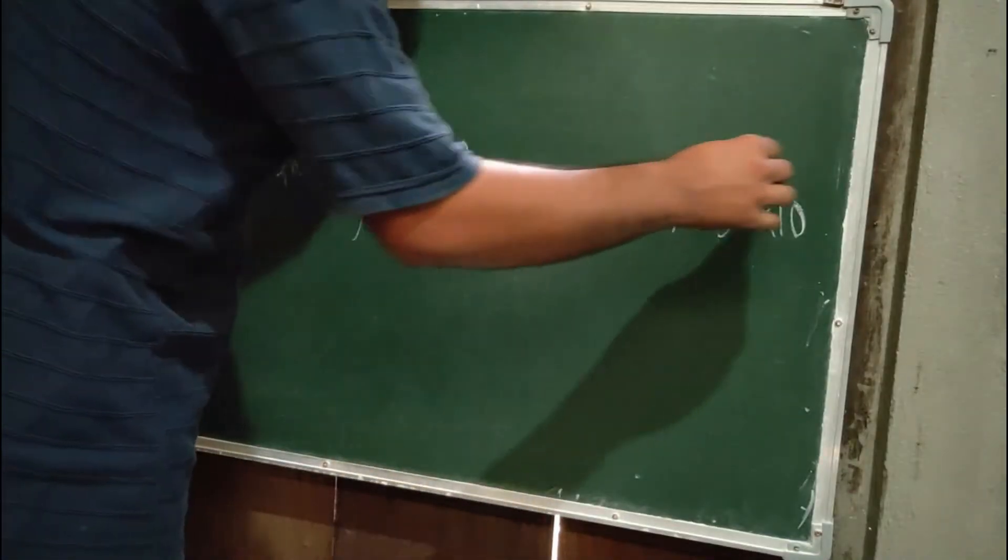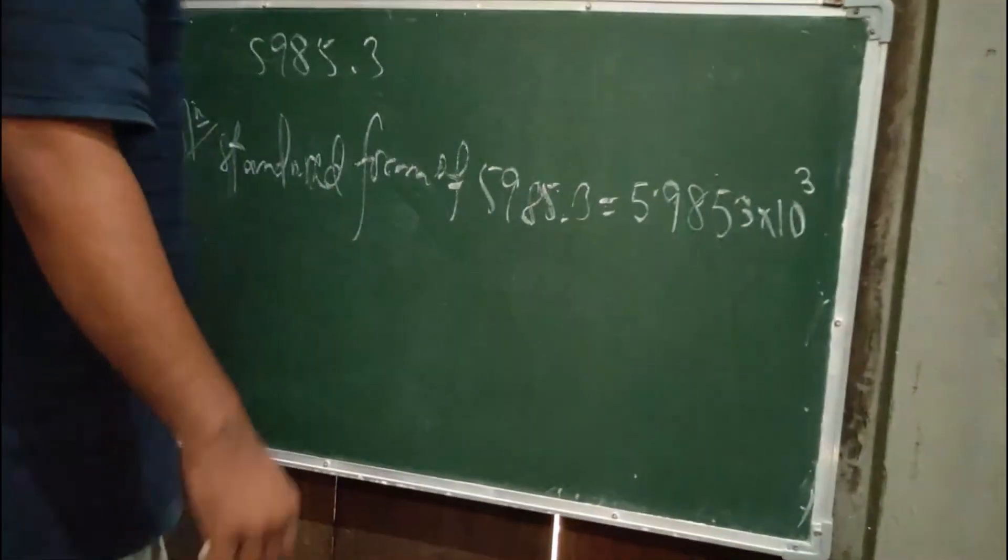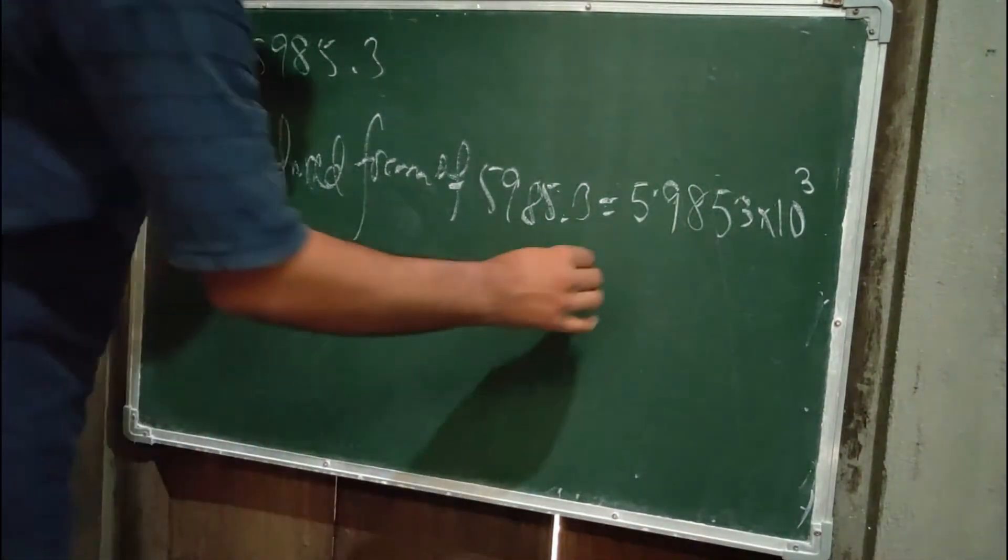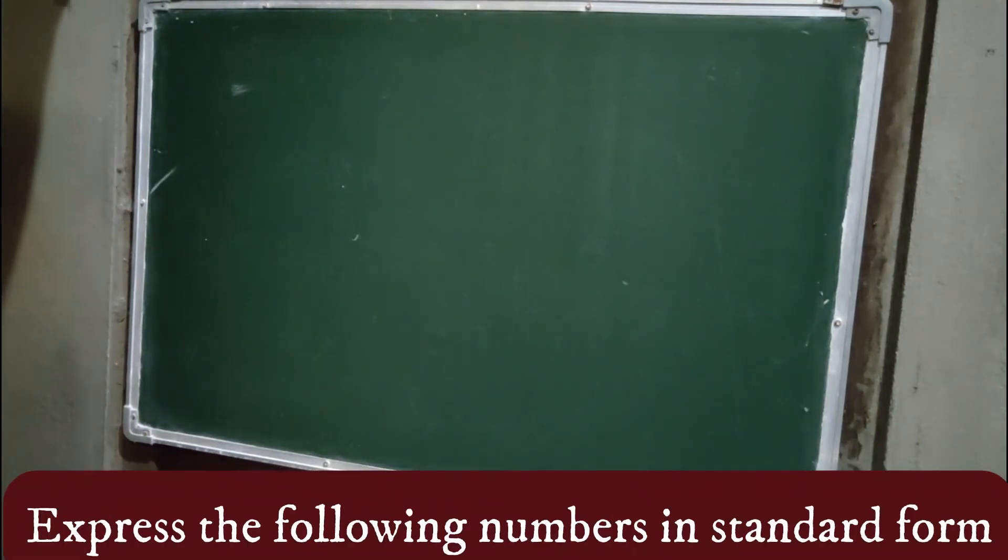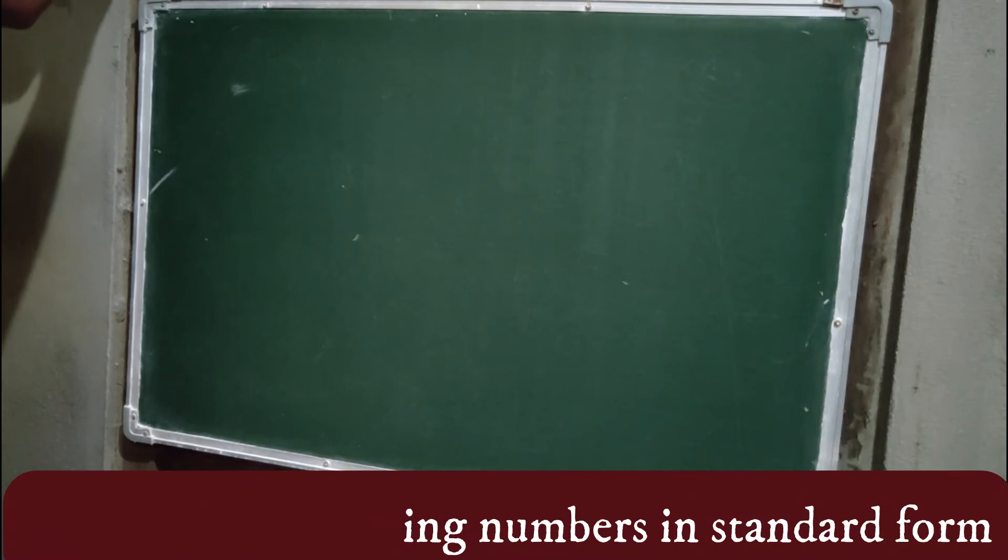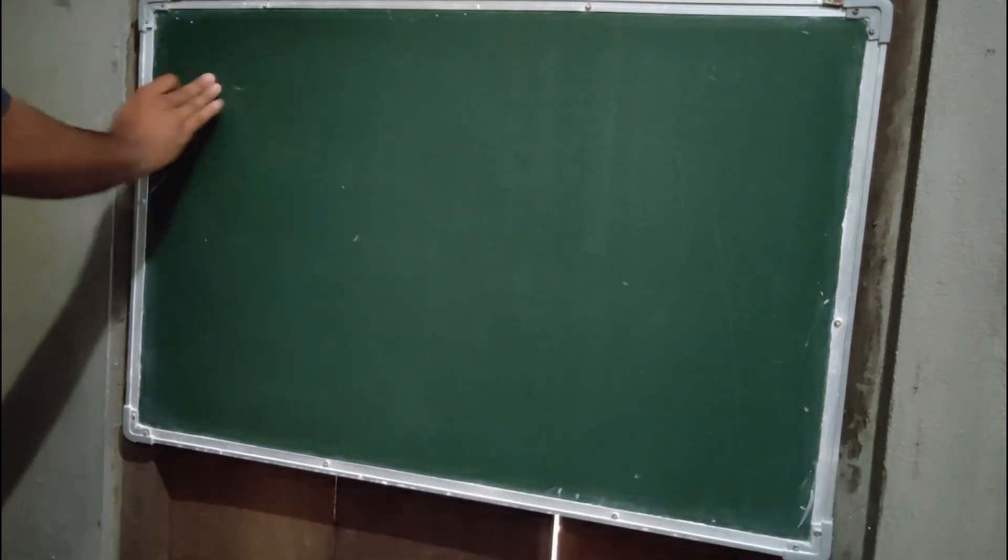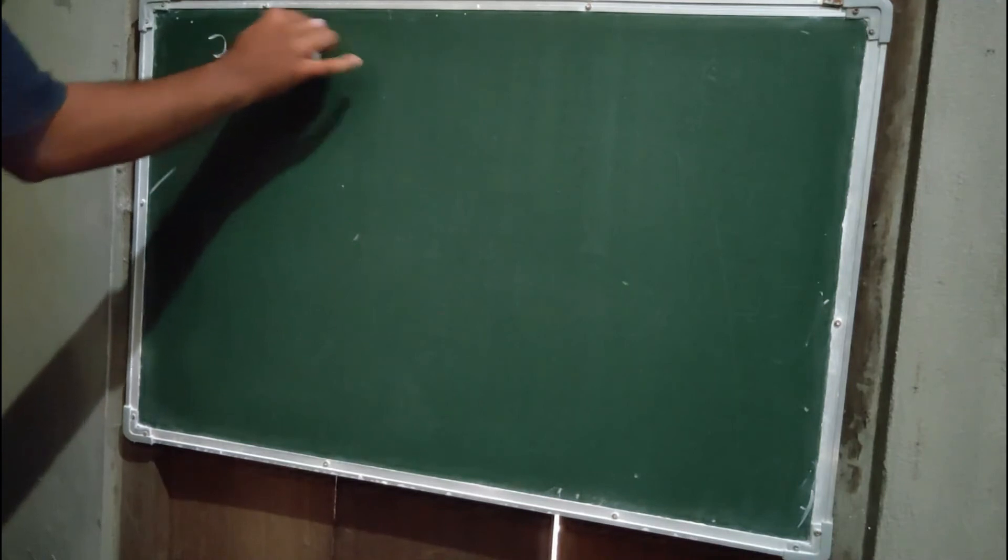That's why 10 to the power 3. This is our standard form. Now we'll discuss some more examples: express the following numbers in standard form - 765950.